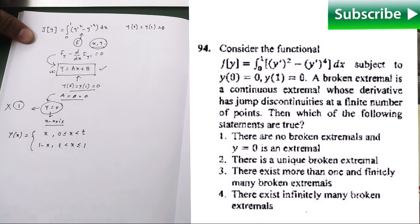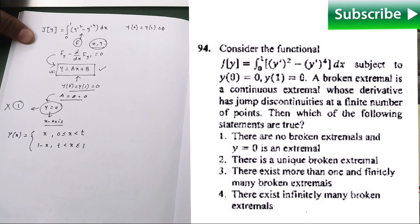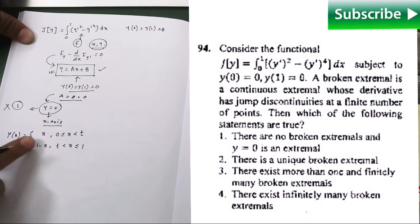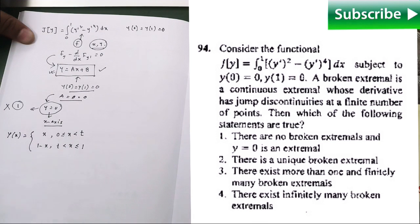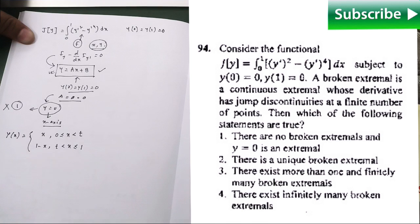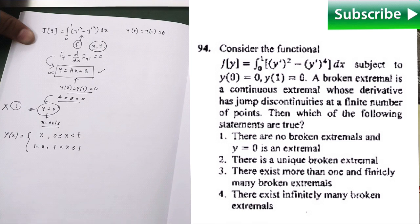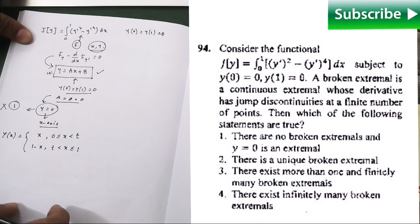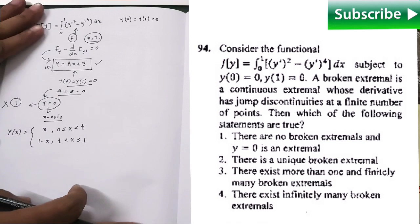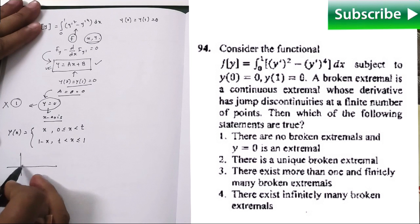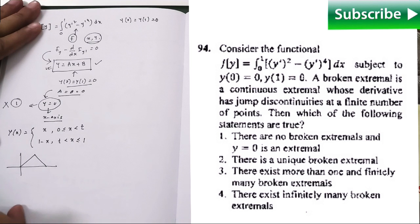Observe carefully that it is satisfying each and every condition given to us because at x equals 0 it is 0, at x equals 1 it is 0. Second thing, it is a broken extremal because if you try to draw the graph of that function, then you will have this kind of thing. That means it is broken, no problem with that. There is a peak, there is a corner.